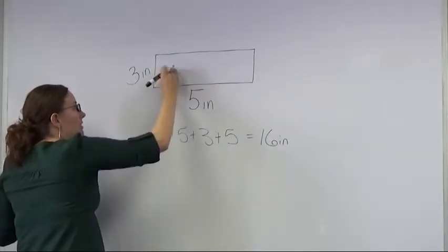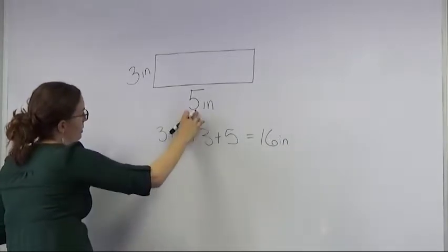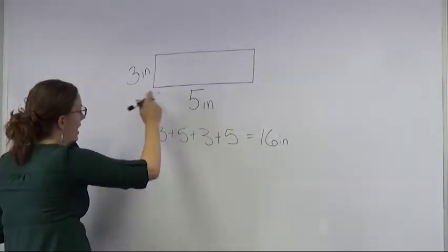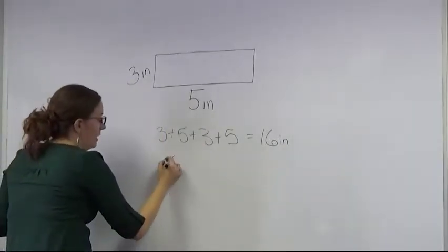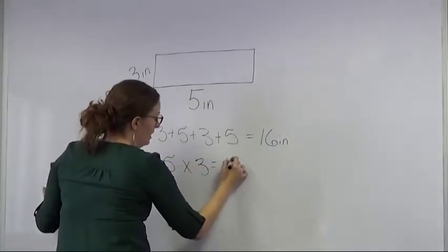To find the area, we're talking about finding how much space is on the inside of the rectangle, so we would need the length and the width for that. We would multiply five times three, and that would give us 15.